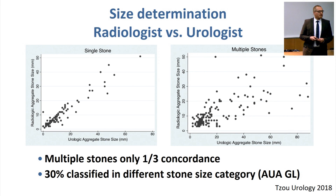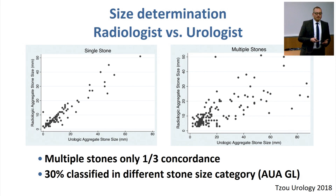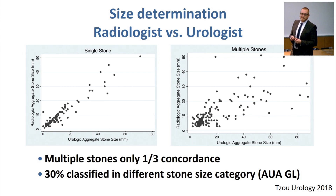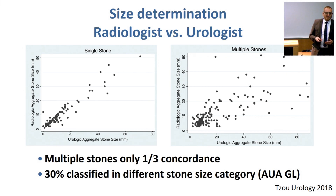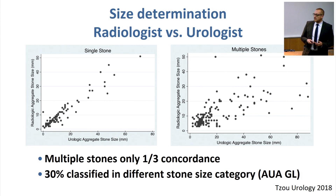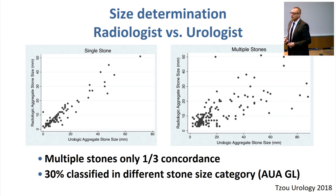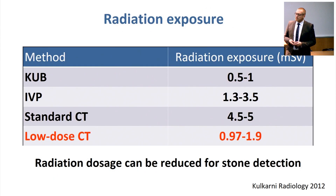Interestingly, you get different results if you let different specialists measure your stone. The urologist determined different stone sizes, and that had an impact — based on the AUA guidelines — on how you group the stone size, and again that had an impact on the decision about which treatment you go for.